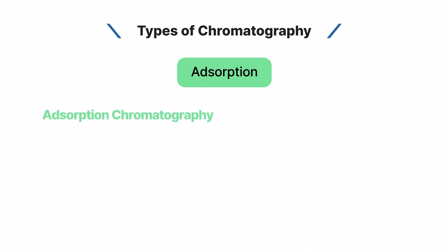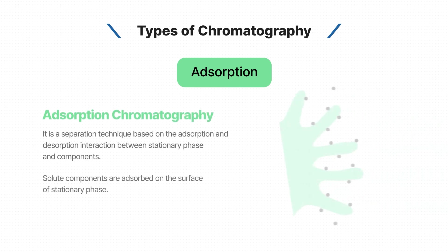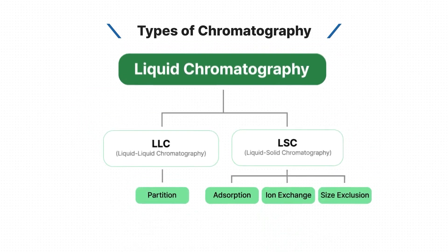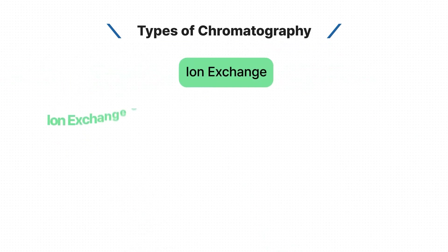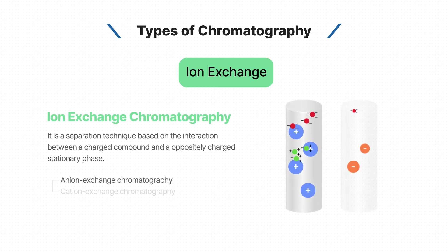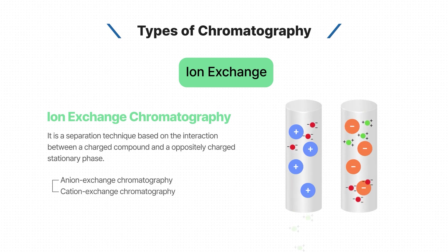Adsorption chromatography is a separation technique based on the adsorption and desorption interaction between the stationary phase and components. Ion exchange chromatography is a separation technique based on the interaction between a charged compound and an oppositely charged stationary phase. There are two types of ion chromatography: anion exchange and cation exchange.